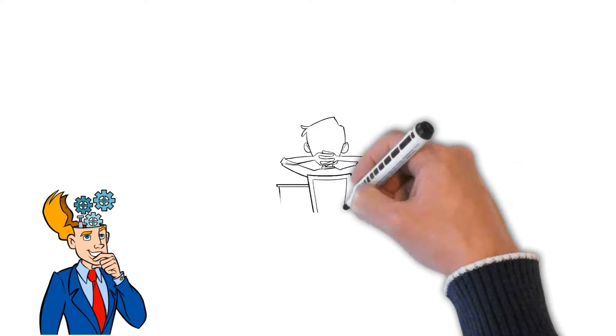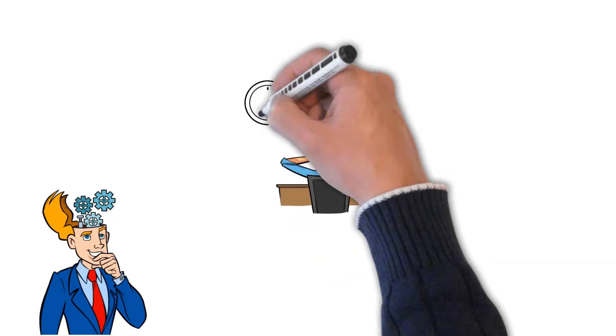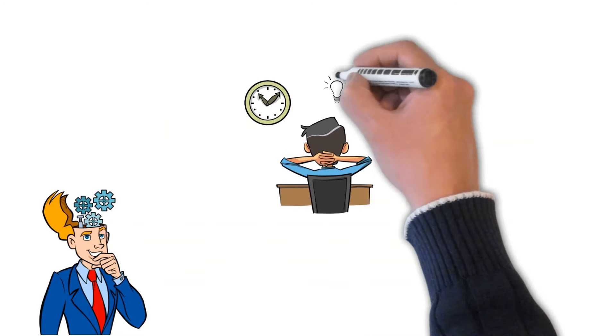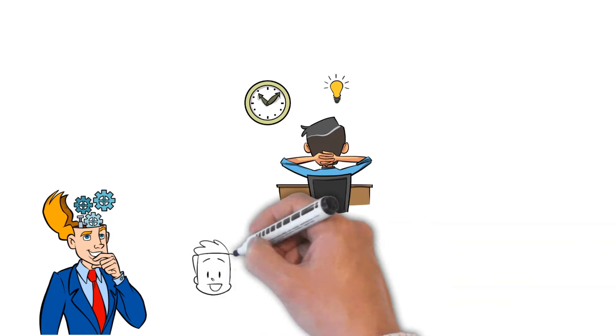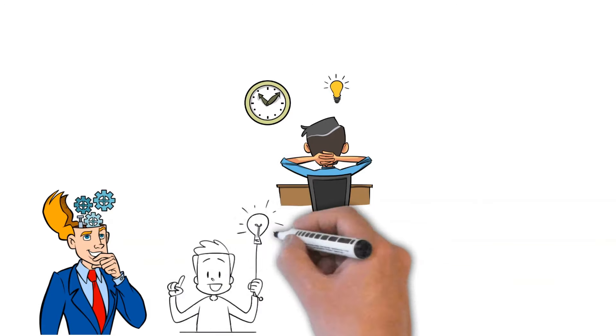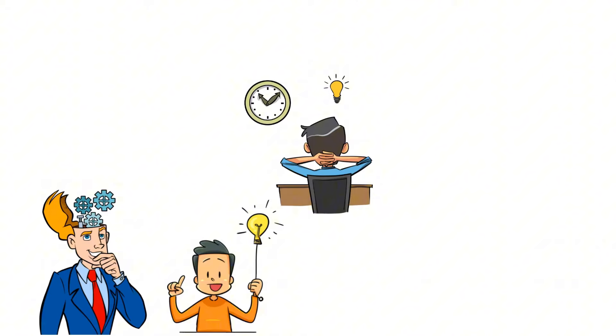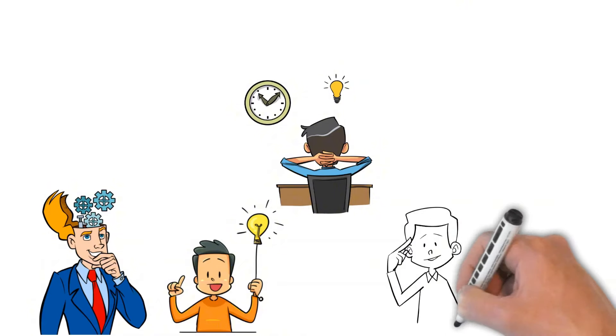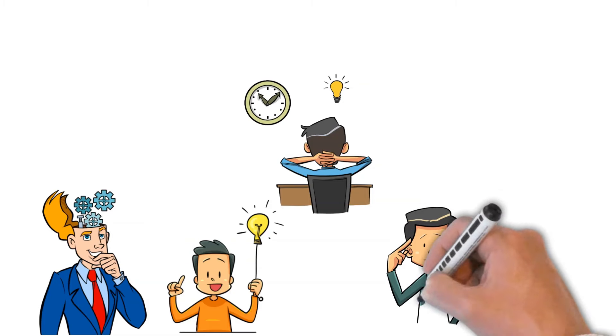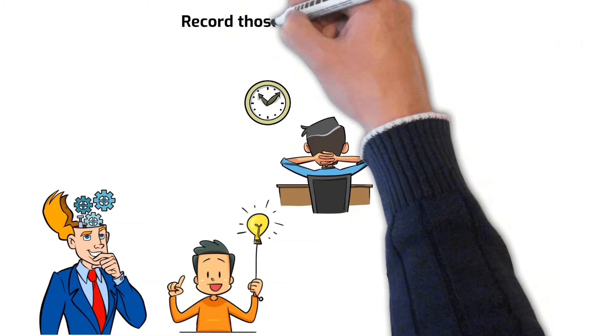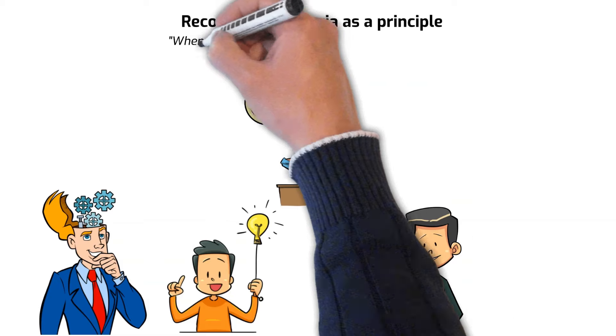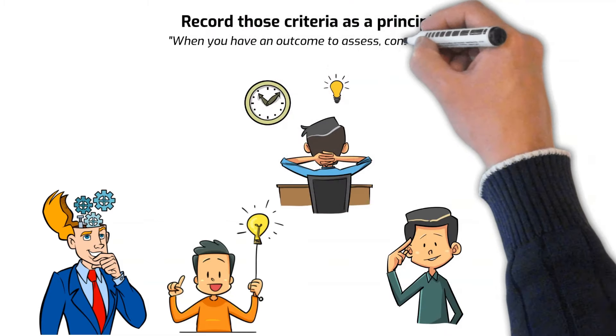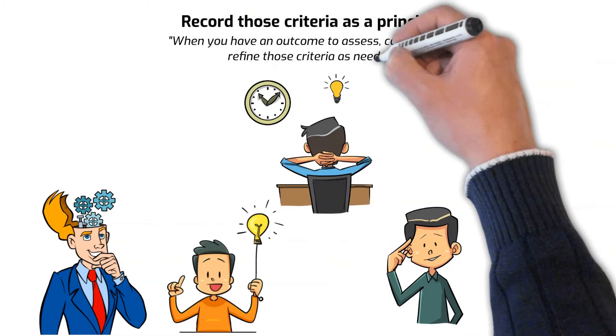This can save time and energy and dramatically increase your likelihood of making the right decision. In other words, this method is a shortcut to making better decisions with less effort. The key to doing this well is to slow down your thinking and carefully assess the criteria you use to decide. Record those criteria as a principle. When you have an outcome to assess, consider and refine those criteria as needed.